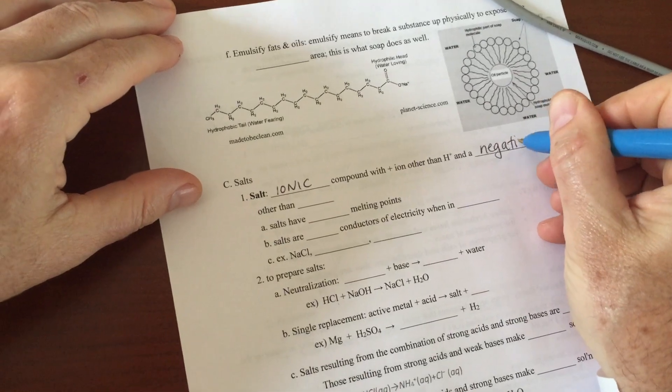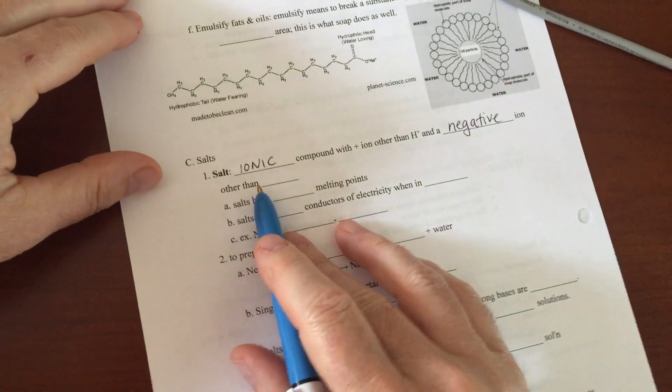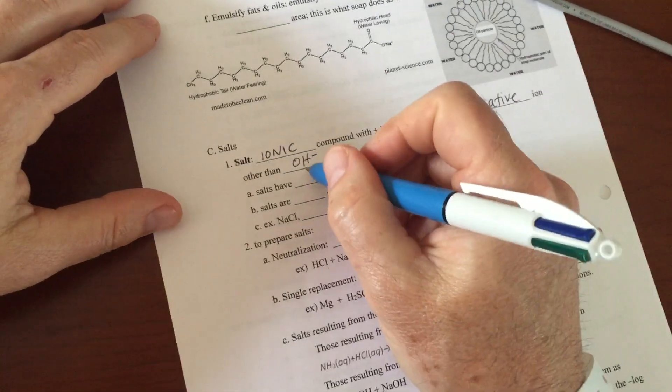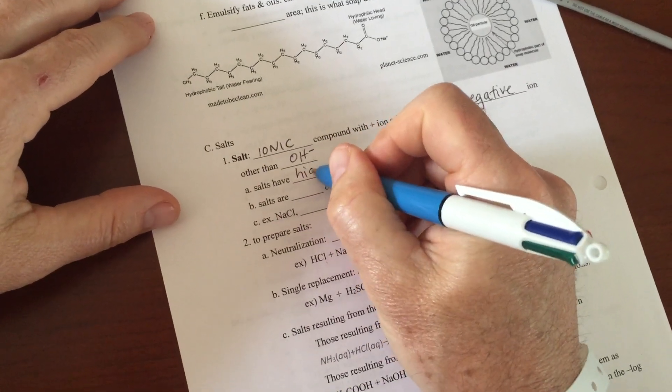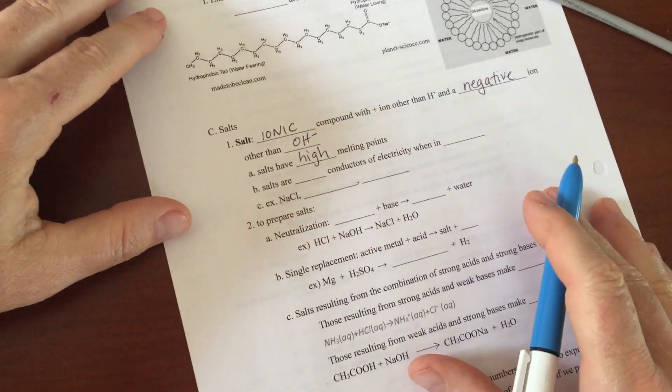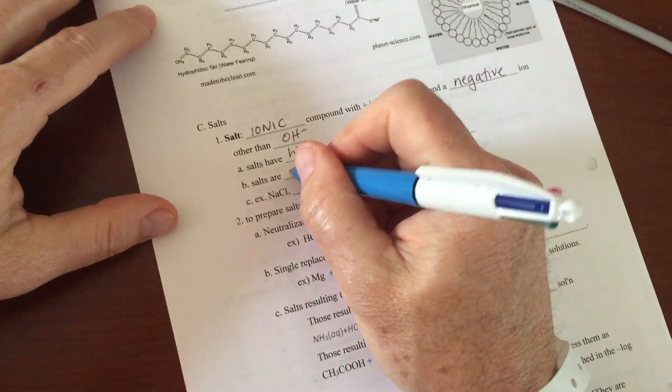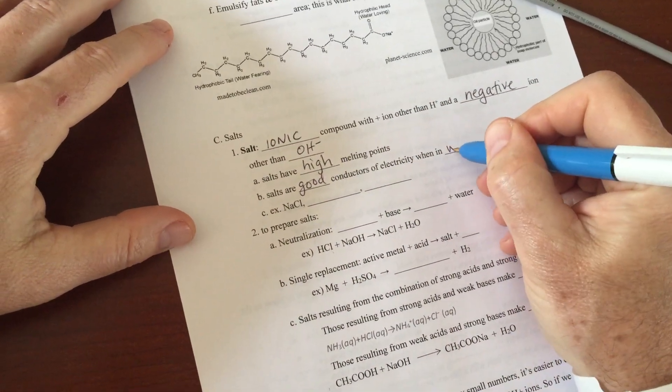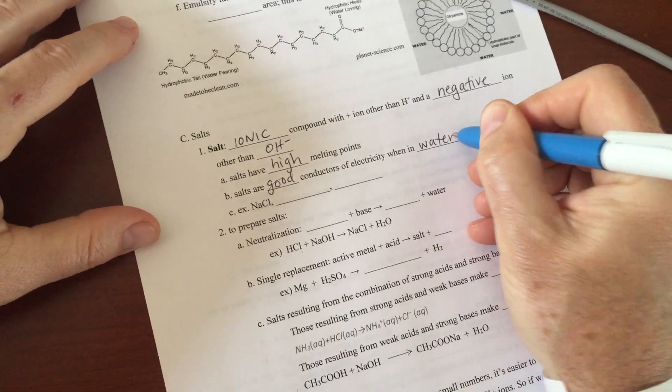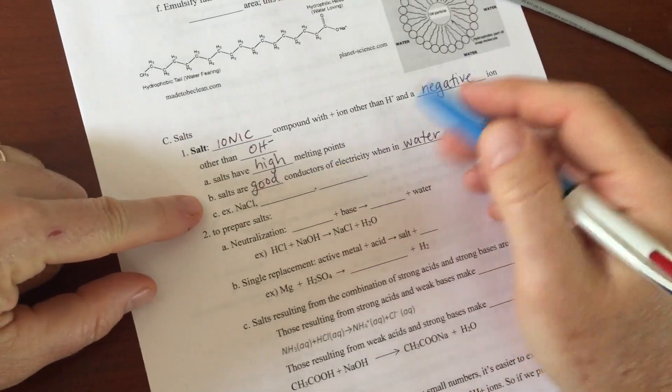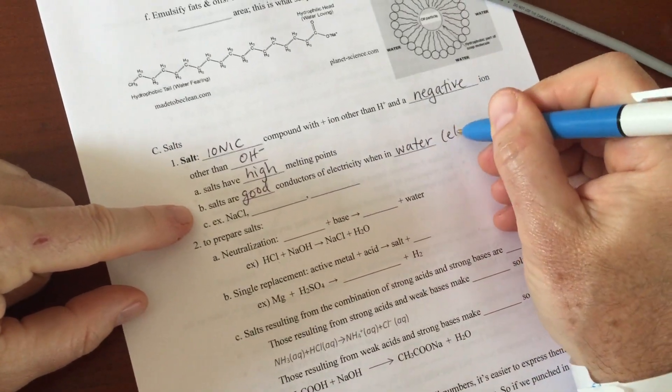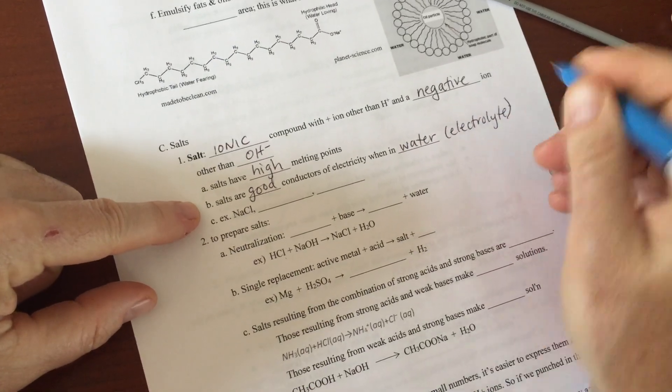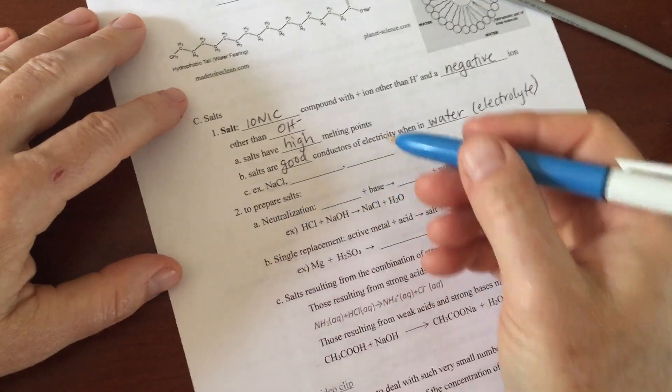Remember, that's OH-. Salts have very high melting points. Salts are good conductors of electricity, but only when they're in water. Remember, if something can conduct electricity it's called an electrolyte.